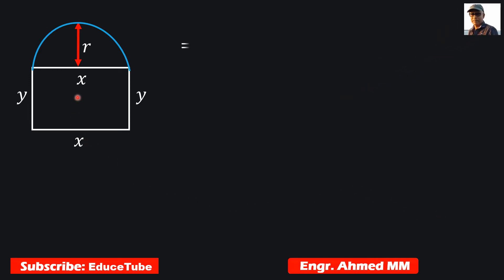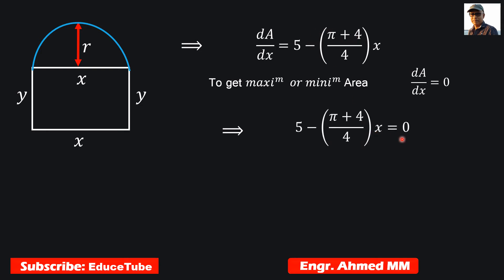So here we got the first derivative. Now as I said, to get maximum or minimum area, we must consider that first derivative equal to 0. So we can write this right-hand side part equal to 0. From here we can find the value for x. This is the value for x. Now we need to go for finding the second derivative.